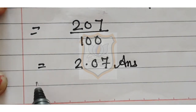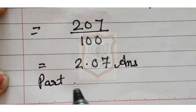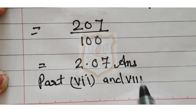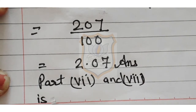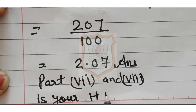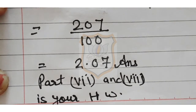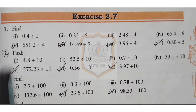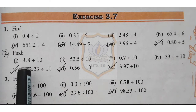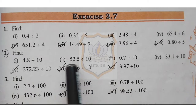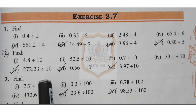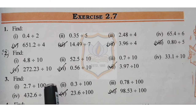Question number 1 parts 7 and 8 are your homework — you have to do those yourself. Now let's solve exercise 2.7 question number 2. In question 2, you have to divide decimal fractions by 10. The first part is 4.8 divided by 10, and the second is 52.5 divided by 10.